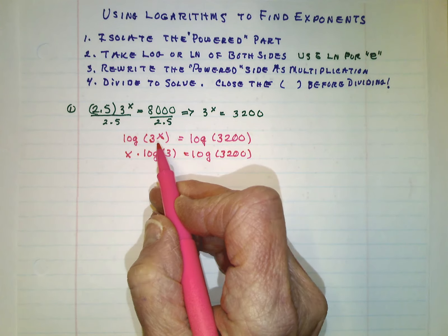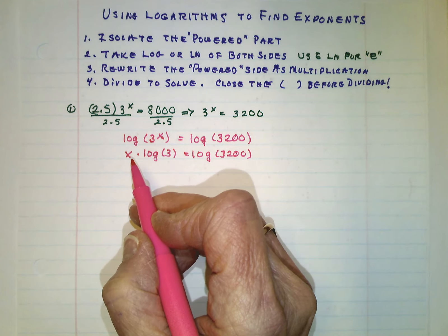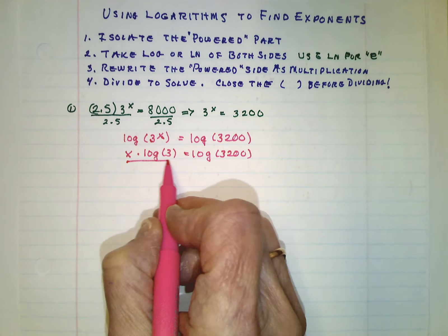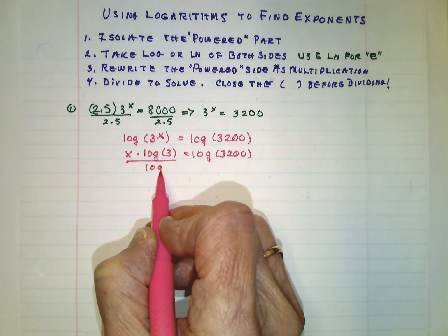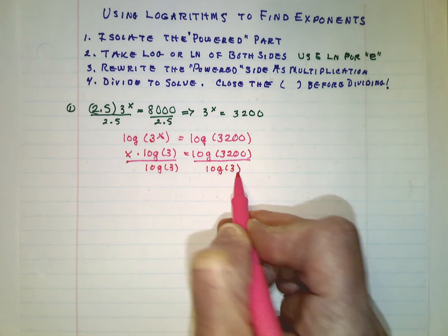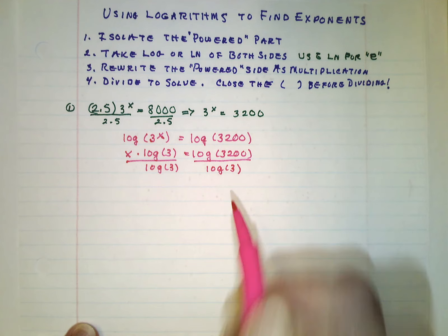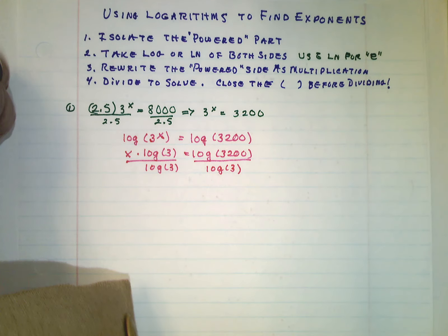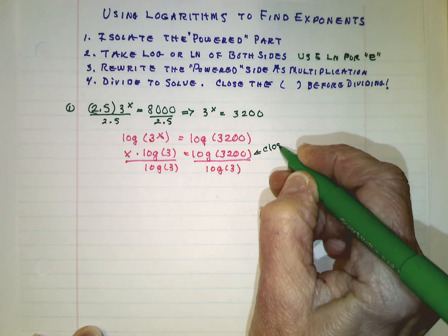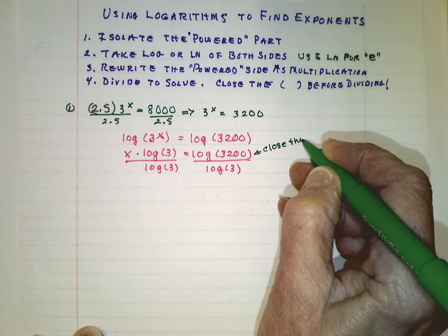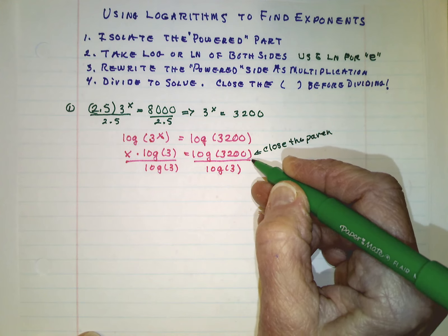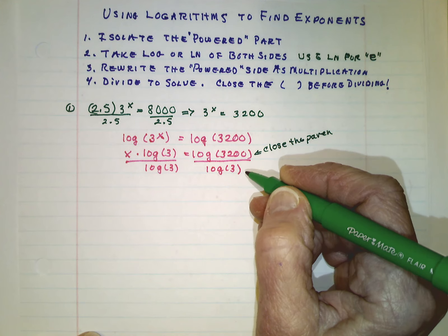Well, x is now free of being in the logarithm. And we can get it all by itself if we just divide both sides by the log of 3. Or let the calculator divide both sides by the log of 3. Please be careful. Be sure to close parentheses before you start division. Because if you don't close it, you're going to get the wrong answer.